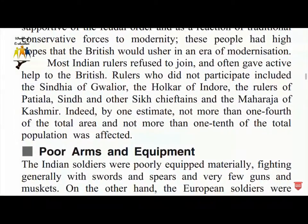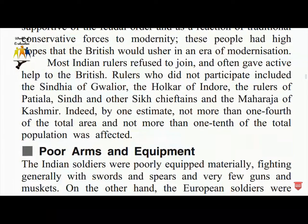Most Indian rulers refused to join and often gave active help to the British. Rulers who did not participate included the Sindhia of Gwalior, the Holkar of Indore, the rulers of Patiala, Sindh, other Sikh chiefs and chieftains, and the Maharaja of Kashmir. By one estimate, not more than one-fourth of the total area and not more than one-tenth of the total population was affected.